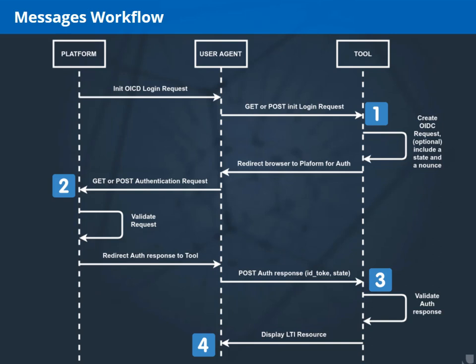The tool receives the state, which can be compared with the state in the session and may contain useful information. The tool then uses the public key of the platform to check the signature, and checks the nonce inside the JWT to be sure it has not been used before. Once the full authentication is finished and everything is validated, the tool reads the user information, the roles, and the resource link to validate authorization. If the user has permission to access the linked resource, the tool displays it in the browser, and the workflow ends with the tool up and running inside the platform.